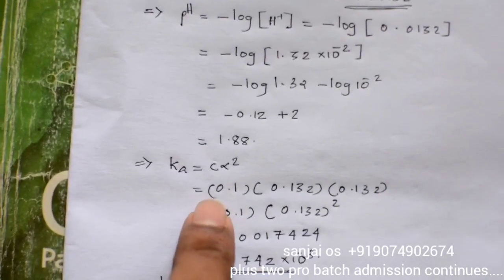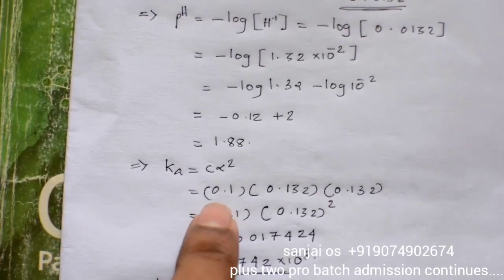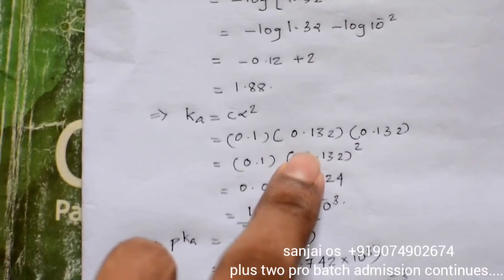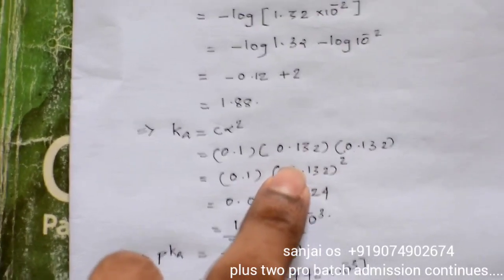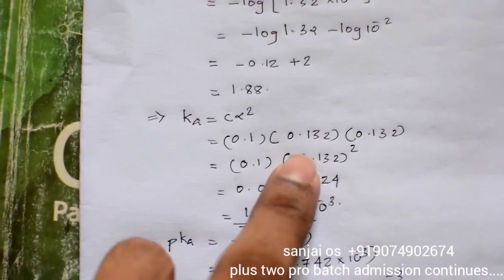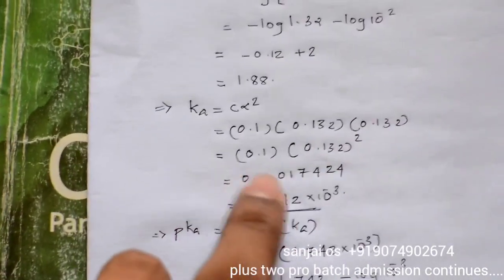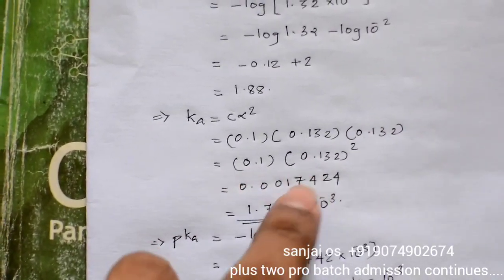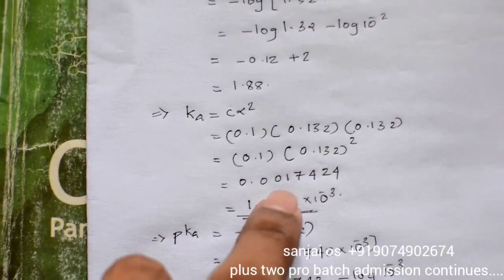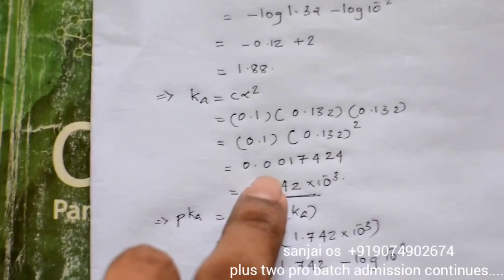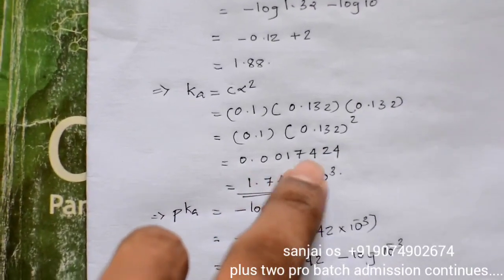C is 0.1 molar and alpha is 0.132. Ka equals C alpha squared, so Ka equals 0.1 into 0.132 squared equals 0.001742, which is 1.742 into 10 raised to minus 3.